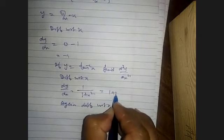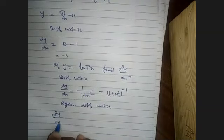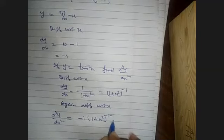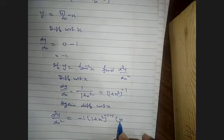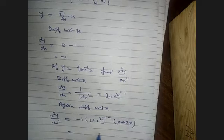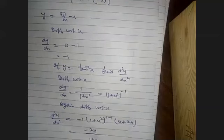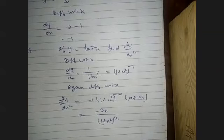Again differentiate with respect to x. Write 1/(1 + x²) as (1 + x²)^(−1). Then d²y/dx² = −1 · (1 + x²)^(−2) · 2x. So the answer is −2x upon (1 + x²)².